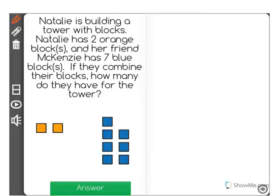Natalie is building a tower with blocks. Natalie has two orange blocks, and her friend Mackenzie has seven blue blocks. If they combine their blocks,